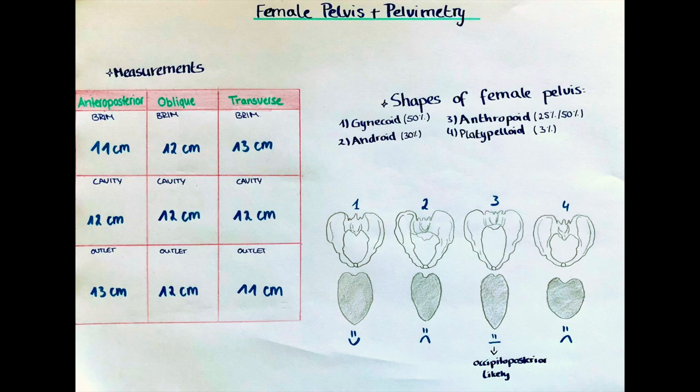The most favorable shape for vaginal delivery is the gynecoid shape, as it has a wide diameter in all planes. The anteroposterior shape is usually not a contraindication for vaginal delivery; however, the baby is more likely to be born in an occiput-posterior position. The android and platypelloid shapes of the pelvis are usually contraindications for vaginal delivery, and in women with this shape, a cesarean section is recommended.